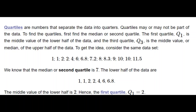Now that we understand how to find the median, we move on to quartiles, which use a very similar process. Since quartiles separate the data into quarters, and the second quarter is the median, the first quartile is the median of all numbers below the actual median. In our data set, we found the median was 7.